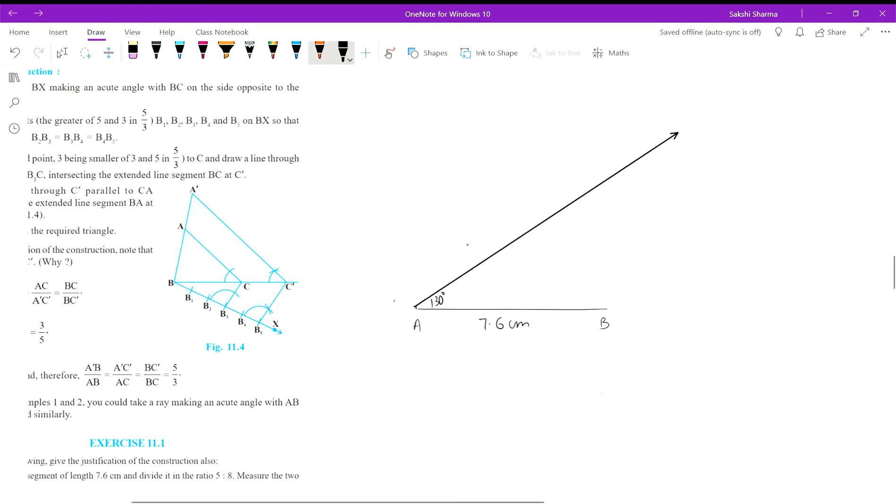Afterwards, we divided this arm AX by cutting off arcs spaced equally from each other 13 times. So this would be A1, A2, A3, assuming that the distance between two points is one unit—4, 5, 6, 7, 8, 9, 10, 11, 12, and 13. Let's quickly name these.